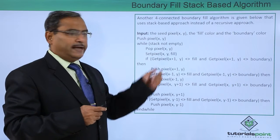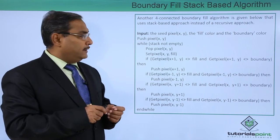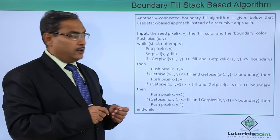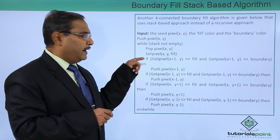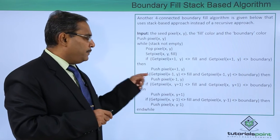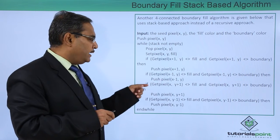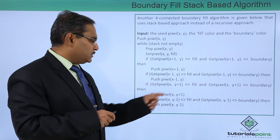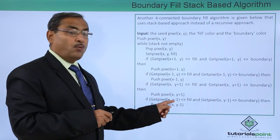Then set pixel x, y with the fill color and then we are doing the checking of the four neighbors. You can find this one that is x plus 1 and y. Here we are having x minus 1, then y. Here we are having x, y plus 1 and here we are having x, y minus 1.